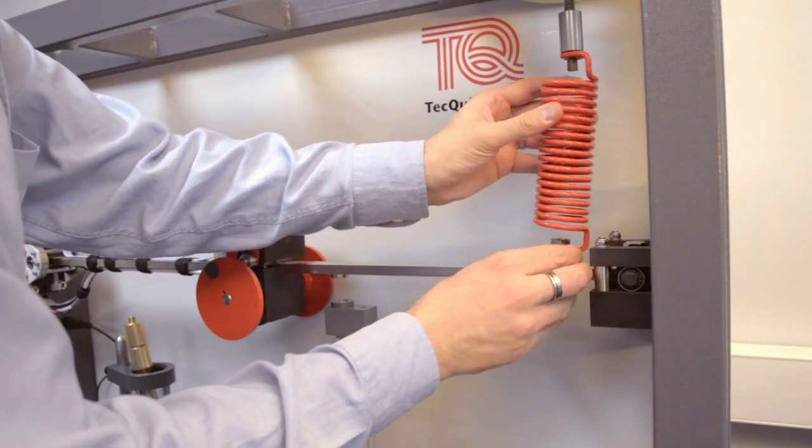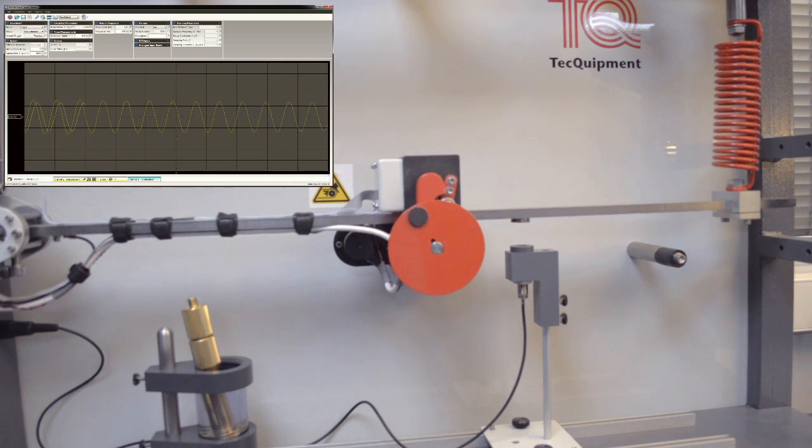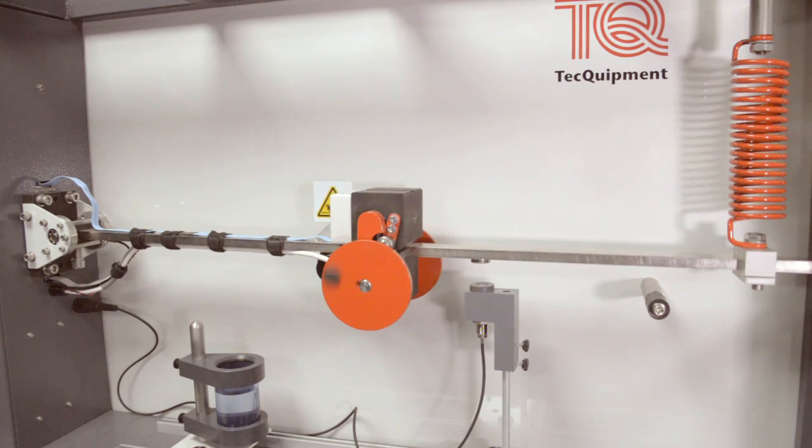Students may vibrate the systems manually. They may also force vibrations using a high quality variable speed servo motor driving a rotating offset mass forming an exciter.